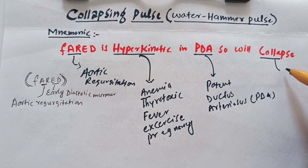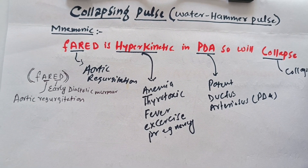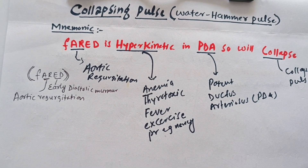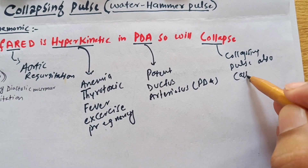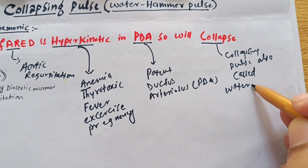From the mnemonic, 'collapse' refers to collapsing pulse, which can also be called water hammer pulse. So these are the conditions in which we see collapsing pulse.